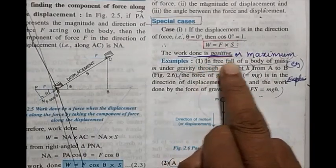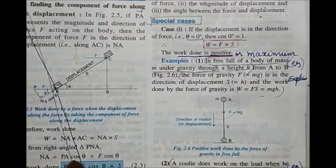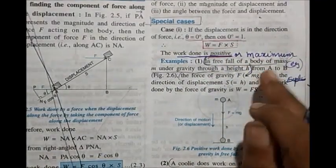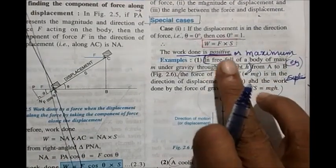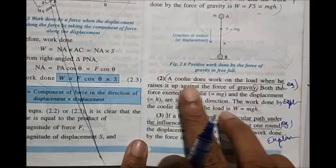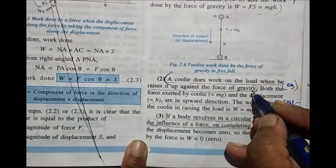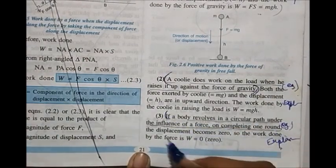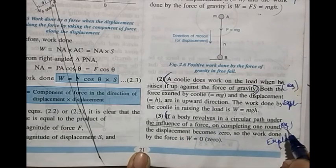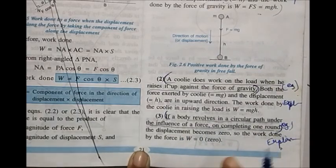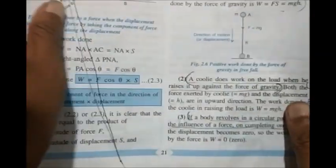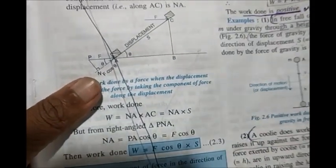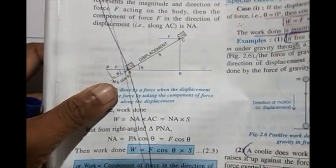Three examples of positive work are given. First: free fall of a body of mass m under gravity through height h. Second: a coolie does work on the load when he raises it against gravity. Third: a body revolving in a circular path completing one round. They can ask for examples or ask whether work done is positive or negative.